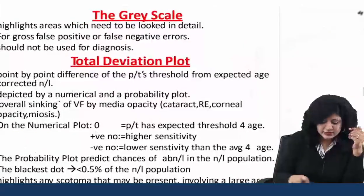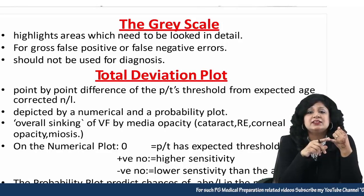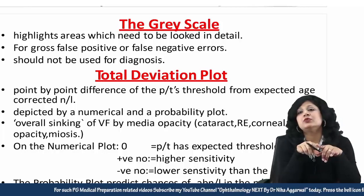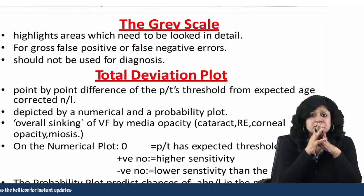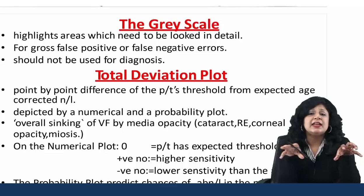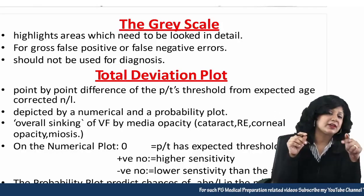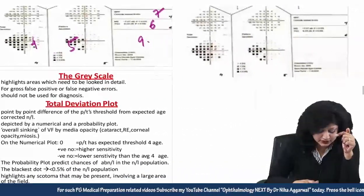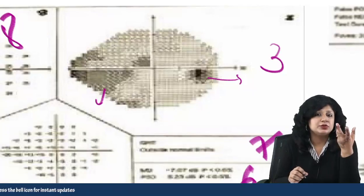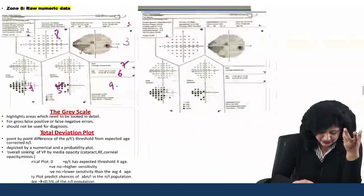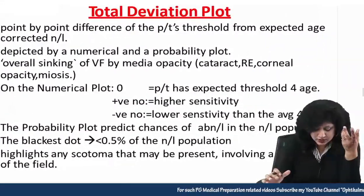Let's talk about the grayscale. You need to focus on the highlighted areas — look in detail at which areas have gross depression, whether darker areas are in the periphery or center. That will give you gross errors. You can see that certain areas are darker — those are actually showing areas of decreased sensitivity.